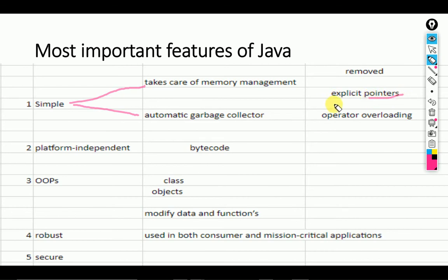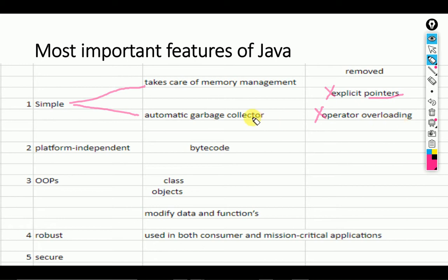Java is also simple because Java removed the pointer concept that exists in C and C++. That's why Java is very simple — the pointer concept is removed. Additionally, operator overloading is also removed in Java.